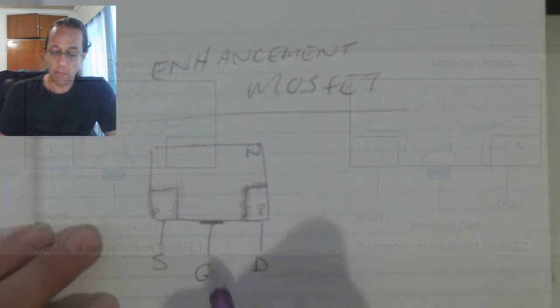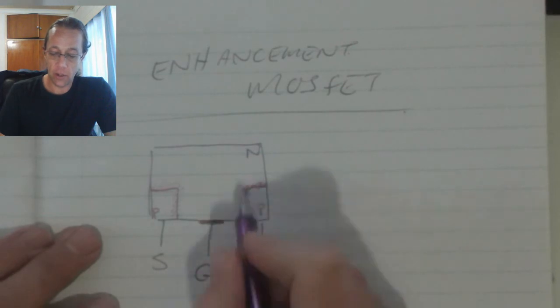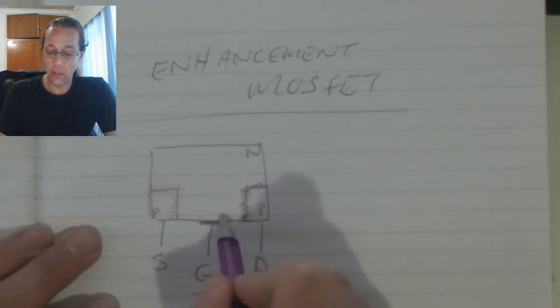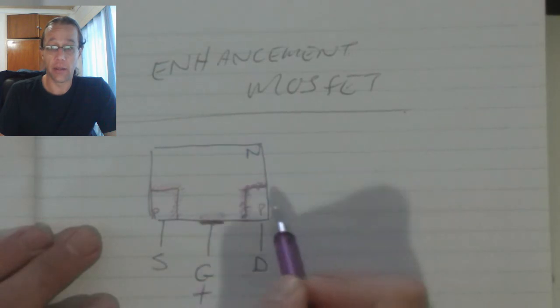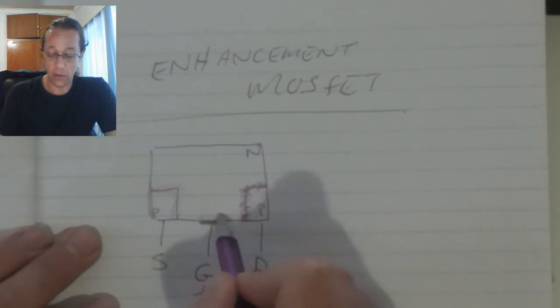And now comes the difference. When we supply—that's an N-type material—so we have to supply a positive voltage over there. When we supply that positive voltage, we are forming a depletion region on the gate there. The size of this depletion region will be dependent on the size of this voltage. So as we increase this voltage, this depletion region is going to increase in size.